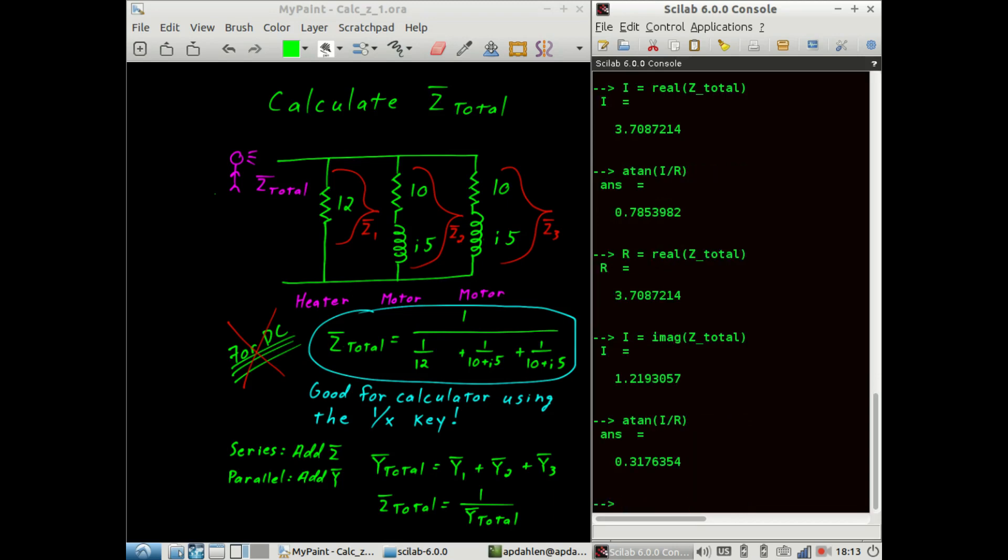So that's 0.32 radians, and now we'll do a radians to degrees conversion, and the angle is 18.2 degrees. So again, let's look up the absolute value of the Ztotal. And that gives us 3.9 at an angle of 18.2 ohms.